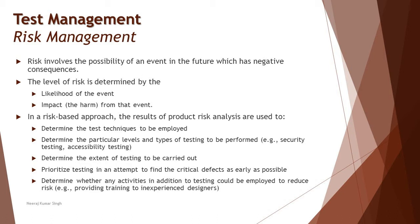So risk is an uncertainty you don't want to happen, but it may or may not happen, and you are trying to anticipate it in your project or product. There are two types of risk: product risk, which is related to the core functionalities or quality characteristics of the application, and project risk, which relates to the entire process of building the product — activities, documentation, people, coordination, etc.